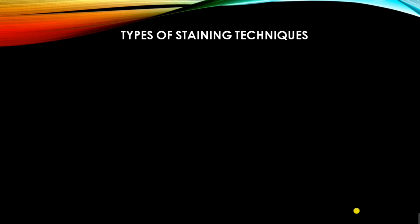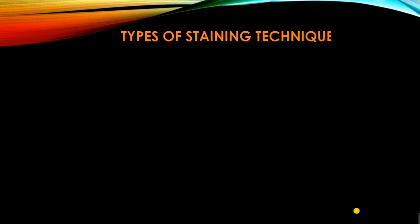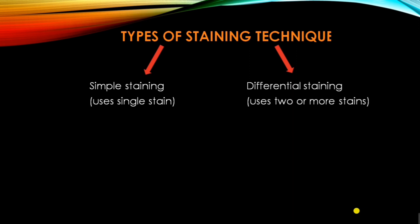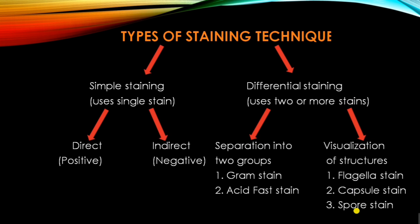There are different types of staining techniques used in microbiology, including simple staining, where we use a single stain, and differential staining, where we use two or more stains. Simple staining is further divided into direct staining and indirect staining. Direct staining, also called positive staining, uses a basic dye to stain the bacteria. In indirect staining, we use an acidic dye which stains the background — it is also called negative staining.